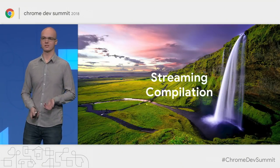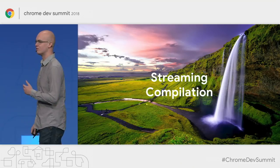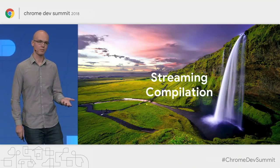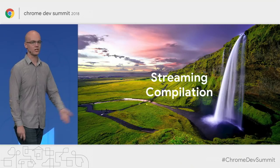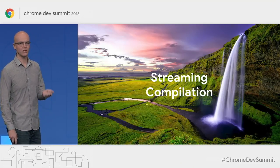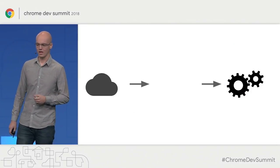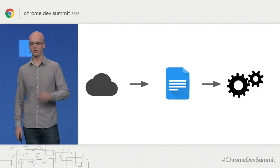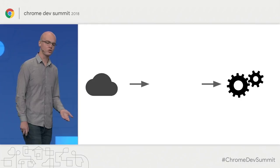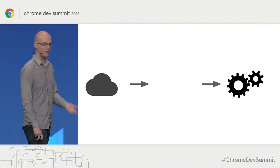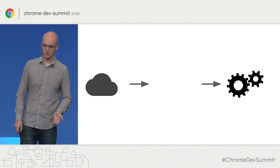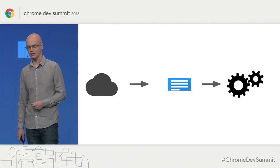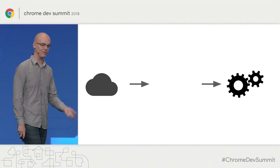One of the big feature requests that we've heard from users is for better performance when you're starting up your application so that your module can actually get going faster. And for that, we've created streaming compilation. In the past, when you wanted to compile a module, you had to wait for the entire module to be loaded off of the network, and only then could you move on and actually compile it. Now with streaming compilation, you can start compiling each piece of your module immediately, even before the other parts have finished downloading.